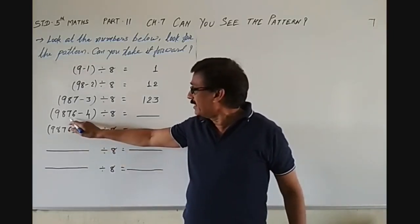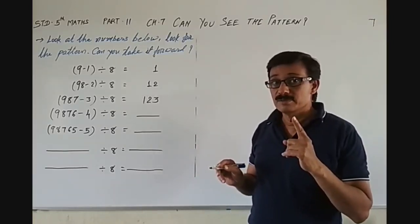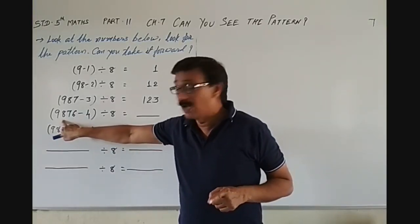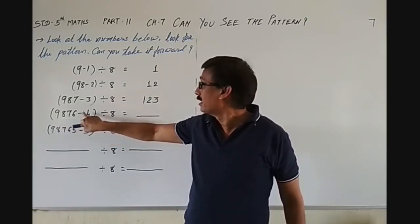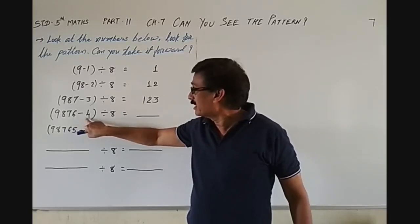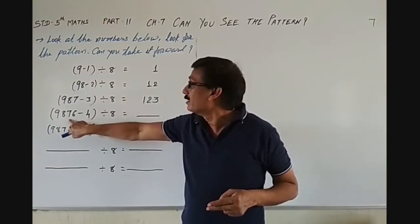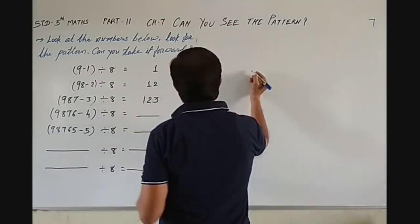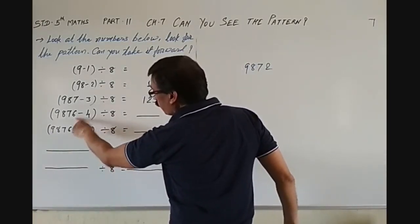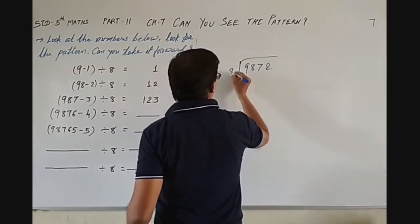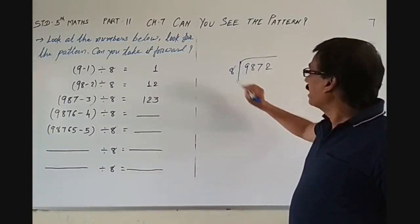Suppose it is 9876 minus 4. So 9876 — what is this number? 9, 8, 7, 6 minus 4. So 6 minus 4 is 2. The answer will be 9872. Why? Because we subtracted 4 from 6, so 6 minus 4 is 2. And now divide by 8. So let's divide 9872 by 8.